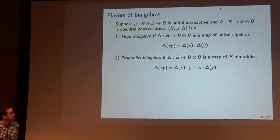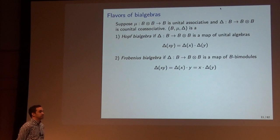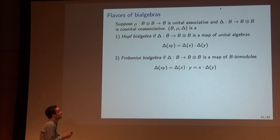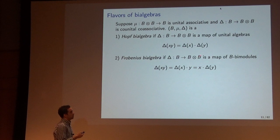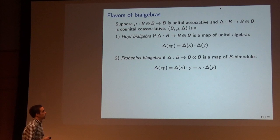We will call B a Frobenius bi-algebra if the co-product is a map of B bi-modules. So now I'm interpreting B as a bi-module over itself with respect to the product map, and B tensor B as a bi-module by acting on the left on the left copy of B using the product, and on the right on the second copy of B using the product as well. A bi-module has an action on the left and an action on the right.